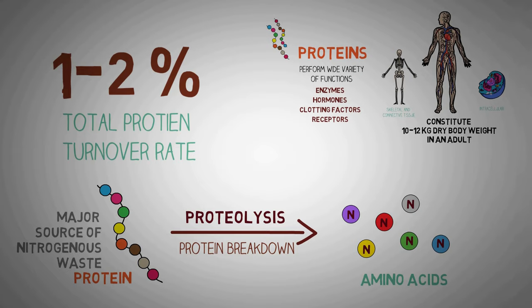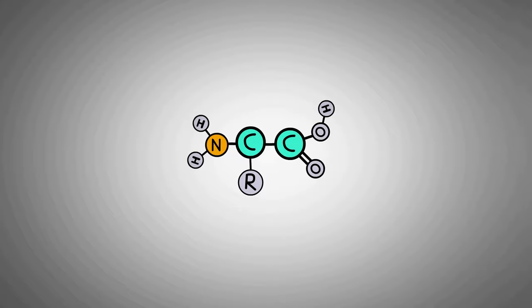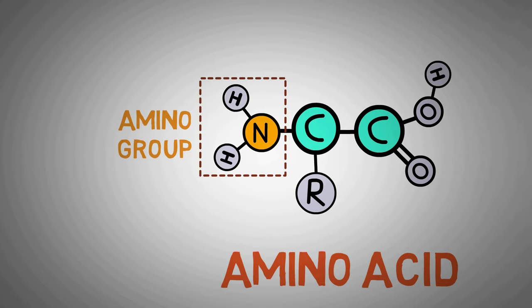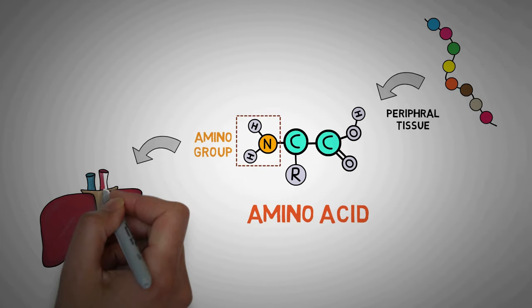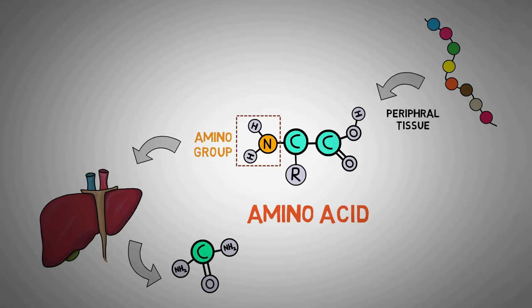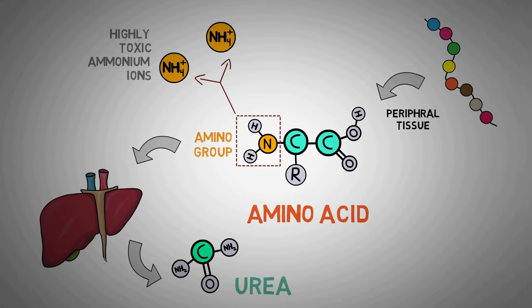If you look at the structure of an amino acid, you can see that it consists of a nitrogen in the form of an amino group. Now, most of the protein breakdown occurs in our muscles and the peripheral body and the nitrogenous waste produced there must be taken to the liver because it is here in the liver that this nitrogenous waste is converted into a less toxic, water-soluble compound known as urea.